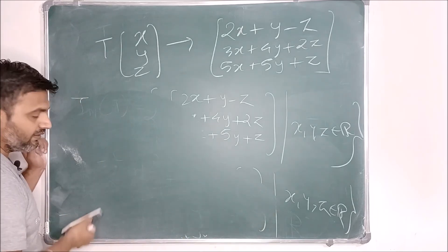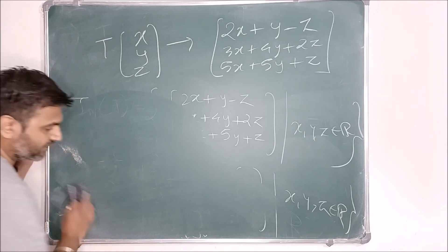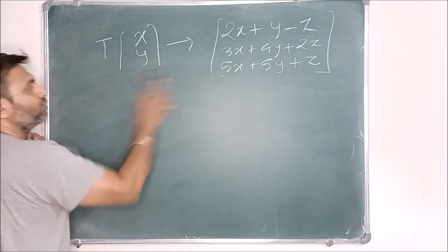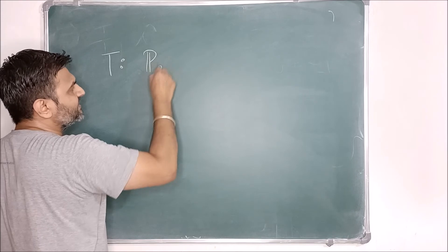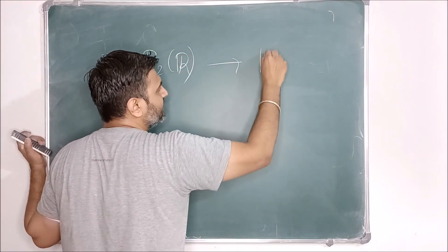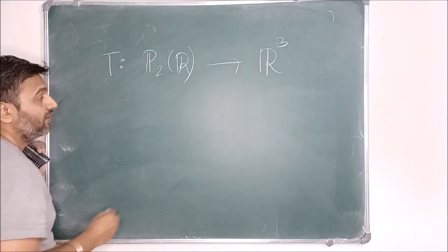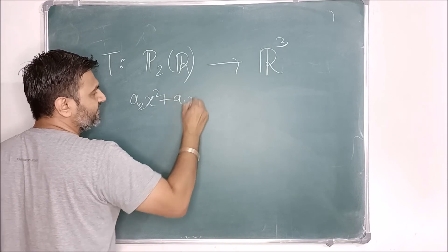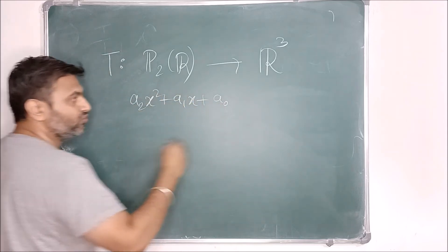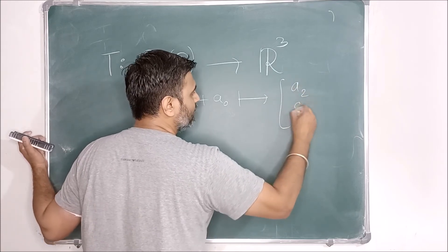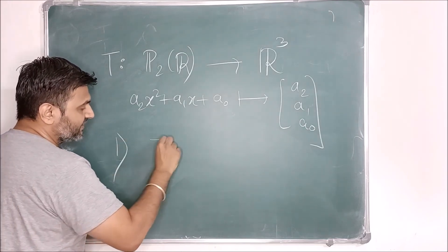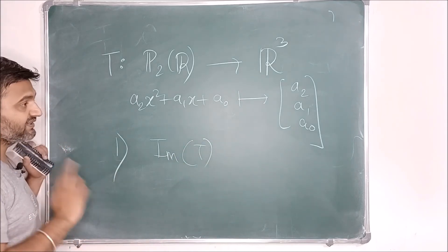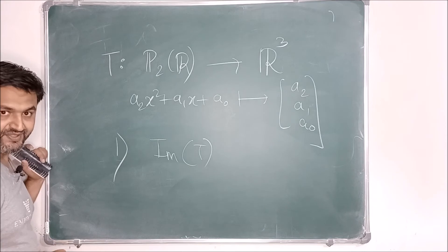Whatever two independent vectors you obtain after row reduction, the image is spanned by those two vectors. Now let me give a homework problem: consider T mapping the polynomial space P₂ to R³, defined by T(a₂x² + a₁x + a₀) = (a₂, a₁, a₀). Tell me what the image space is for this transformation.